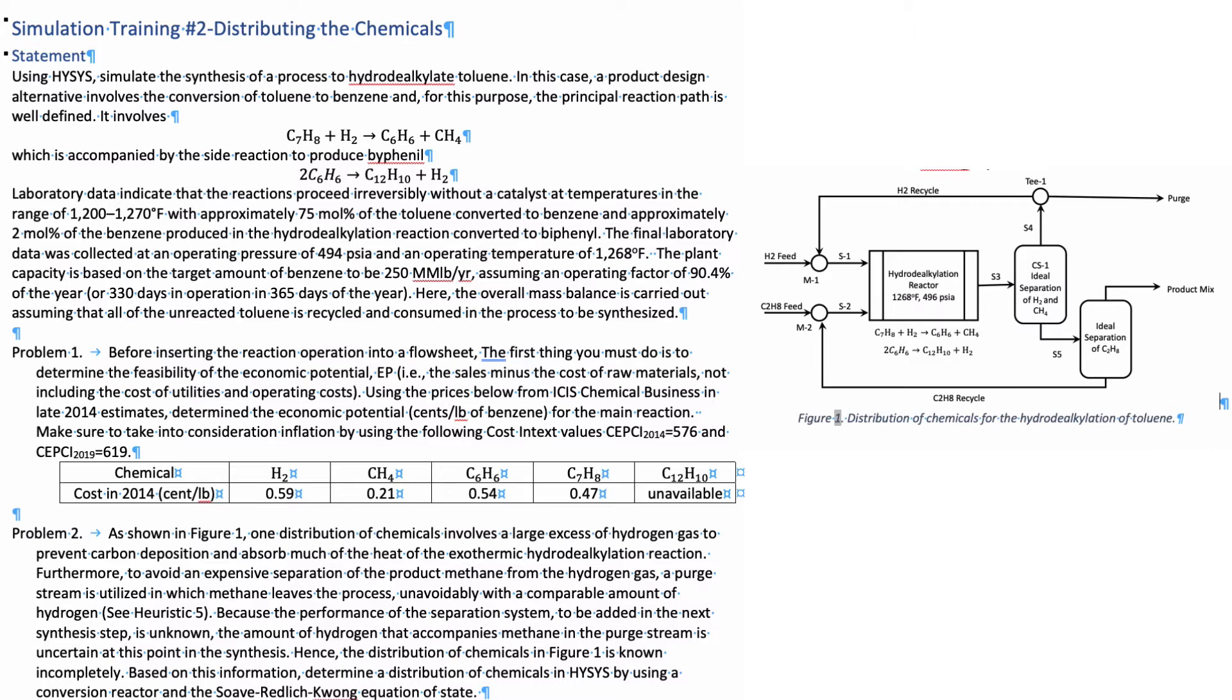The overall mass balance is carried out assuming that all the unreacted toluene is recycled and consumed in the process to be synthesized. This is important because it's giving us information of who is the limiting reactant. When you know this, you can then set some icons and blocks in your HYSYS to control that.